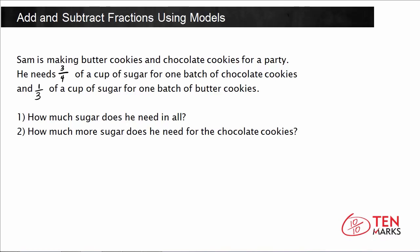Let's start with the first part: how much sugar does he need in all? I'm going to highlight the important parts of this problem. He needs 3 fourths of a cup for one batch of chocolate cookies — let's highlight that in yellow. And 1 third of a cup of sugar for one batch of butter cookies — highlighted in blue. To find how much sugar he needs in all, we use addition: 3 fourths plus 1 third.